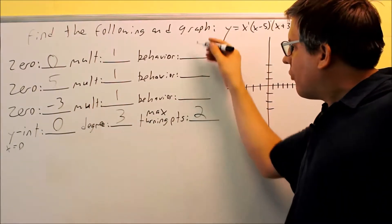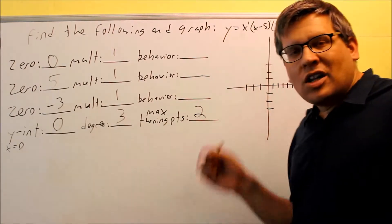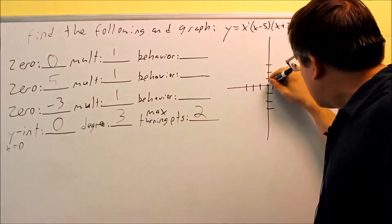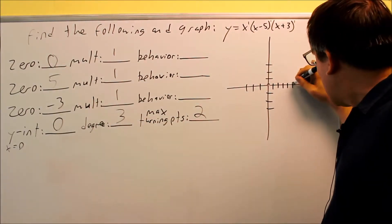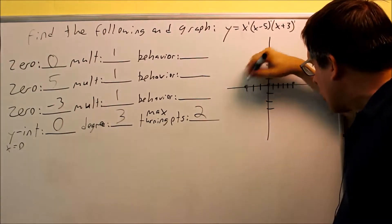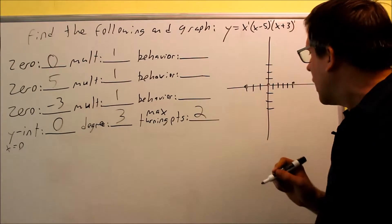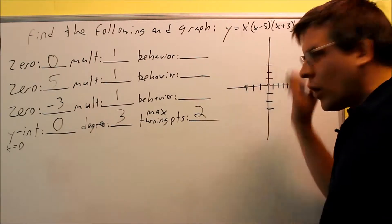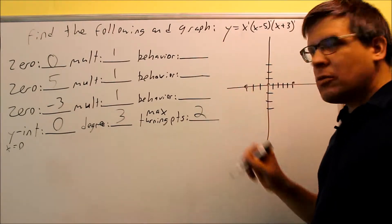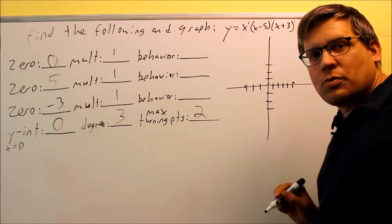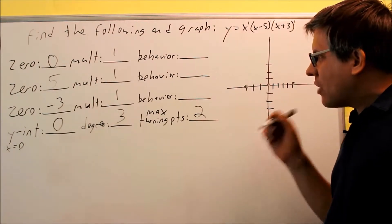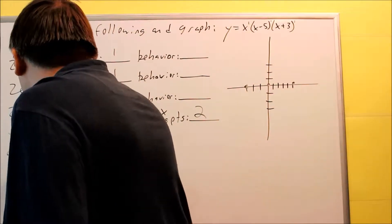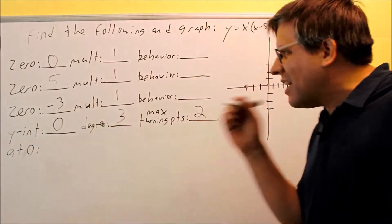The last thing I have to find here is going to be these behaviors. The behaviors are going to tell you what the graph looks like when it crosses at each zero. I know the graph is going to cross through the dots at zero, five, and negative three. But I need to know these behaviors — they will tell me whether it looks like a square or like a line at those crossing points. We need to find the actual behavior equation, doing it at each zero separately.